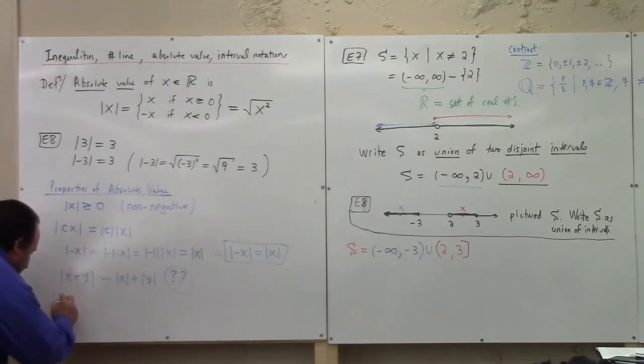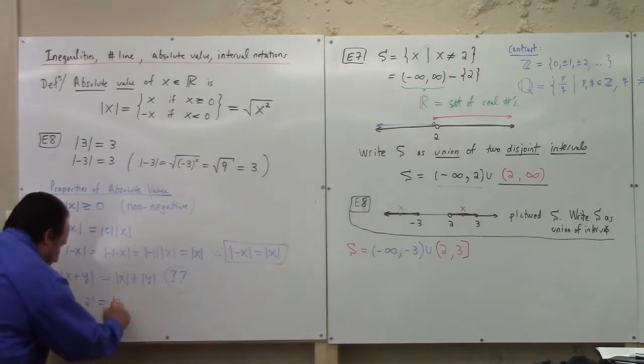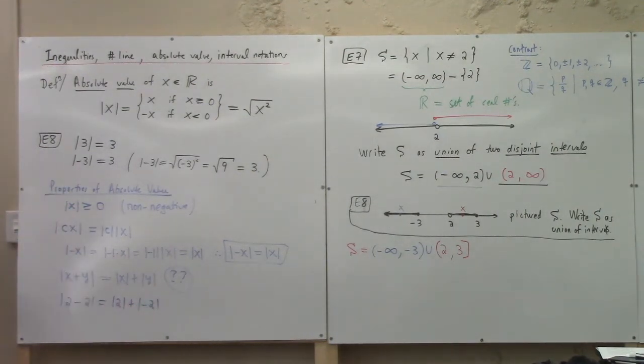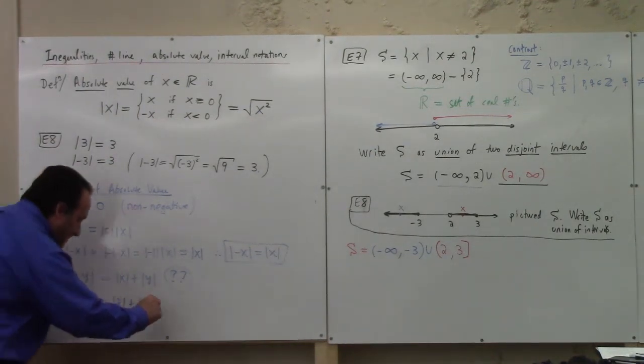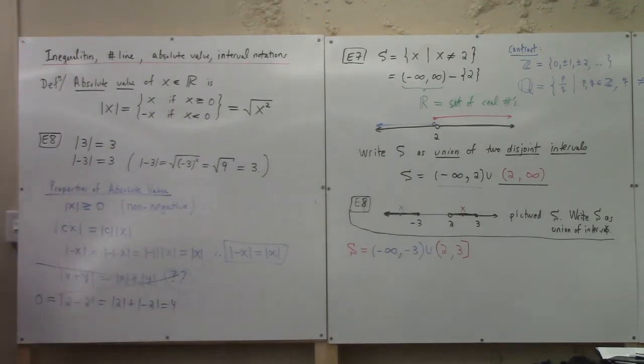How about this? If I did 2 plus minus 2, is that equal to the absolute value of 2 plus the absolute value of minus 2? Well this is the absolute value of 0. Absolute value of 0, 0. What's the other side? 4. Is 4 equal to 0? It is not. So this is forbidden. It is not true that the absolute value of a sum is the sum of the absolute values. It does not work that way.